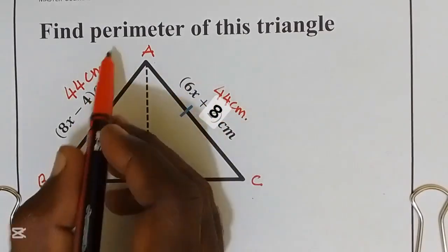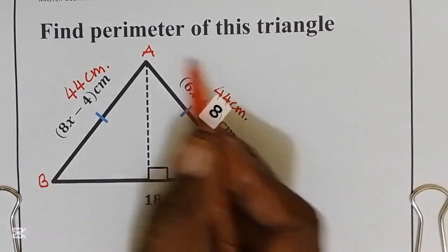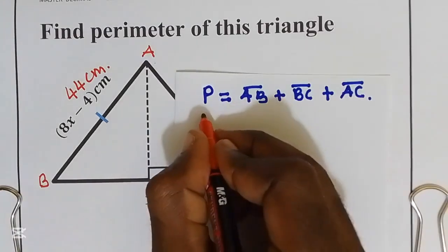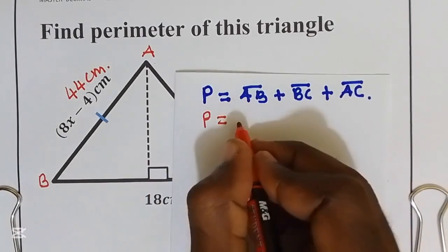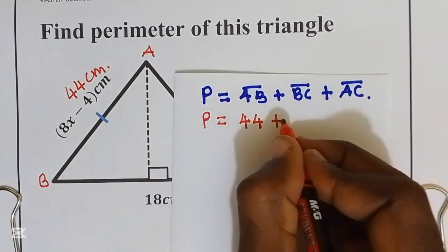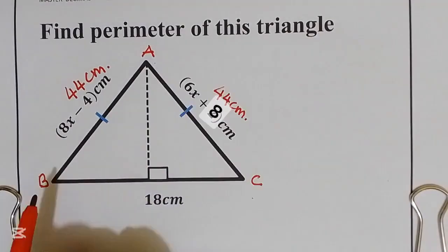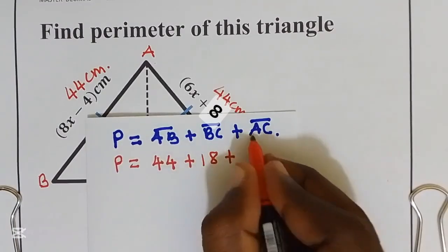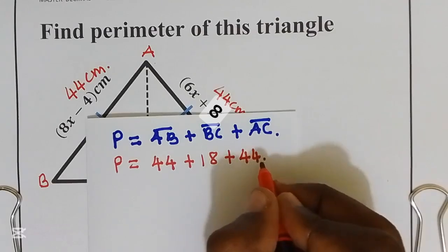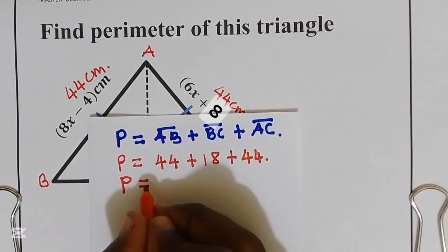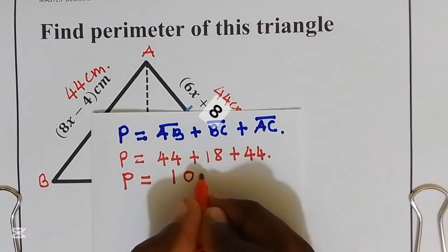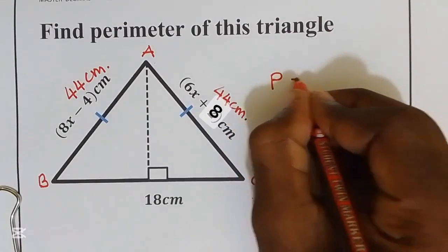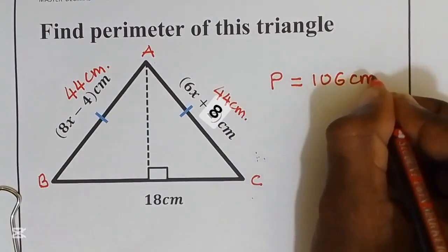Now let's go back to this triangle and find the perimeter, which now is going to be easy because we have all distances. Our perimeter is equal to distance AB, 44 centimeters, plus distance BC which is 18, plus AC which is 44 centimeters. We get our perimeter is equal to 106 centimeters.